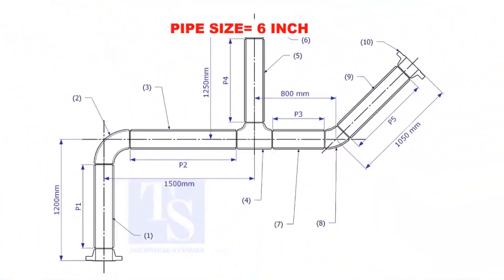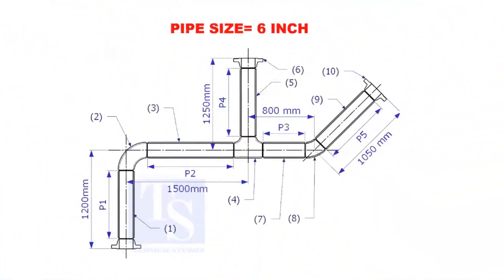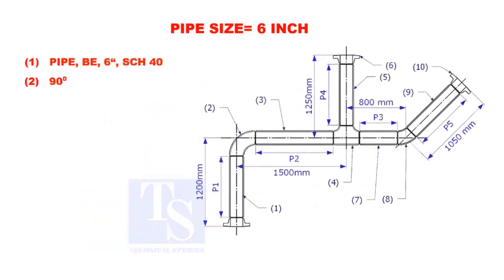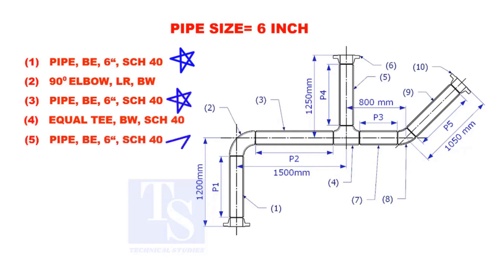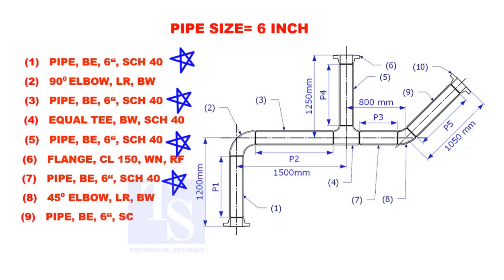Assume that the pipe size is 6 inches. Item numbers 1, 3, 5, 7, and 9 are pipes.